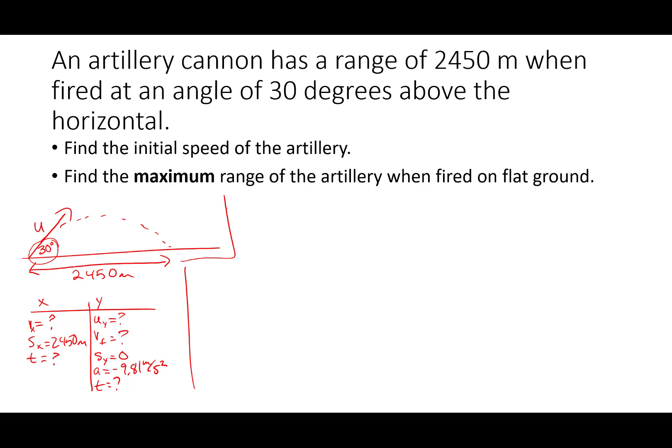So instead, we're just going to use the range equation. The range is our initial velocity squared sine of 2 theta over g, where g is the magnitude of the acceleration. And the range is just the horizontal displacement.